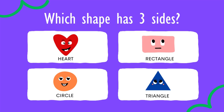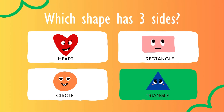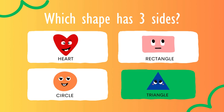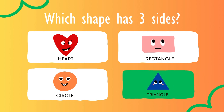Which shape has three sides? Triangle. Triangle has three sides.